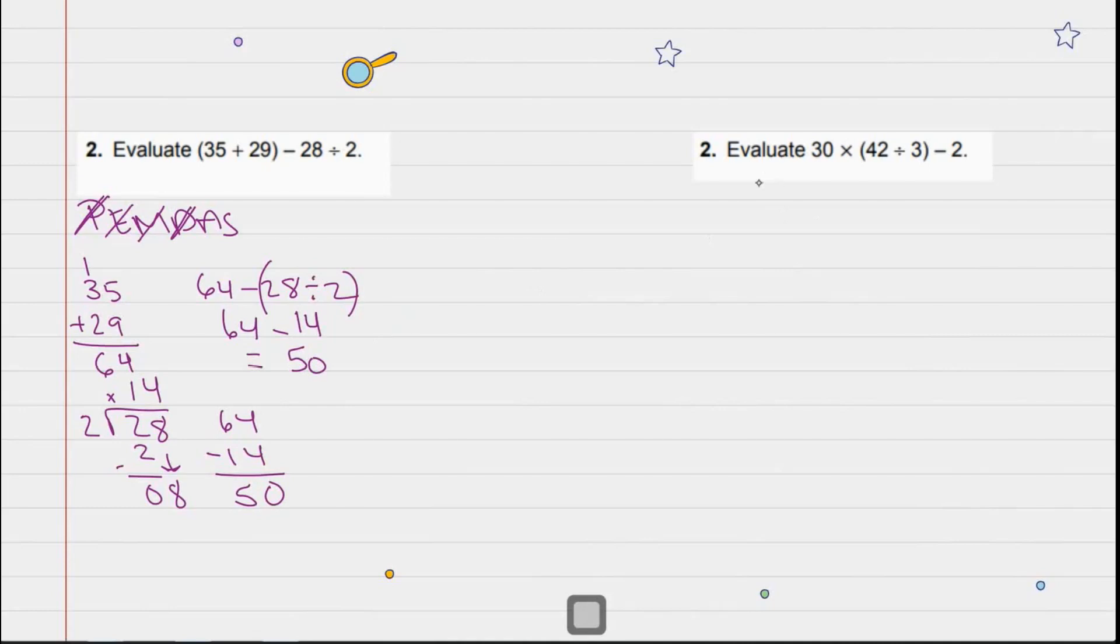Let's move over to this problem. So we have 30 × (42 ÷ 3) - 2. Let's write PEMDAS. Do we have parentheses? Yes, we do. So we're going to start there. 3 goes into 42 how many times? 3 goes into 4 once. 3 × 1 is 3. 4 - 3 is 1. I'm going to bring down the 2. 3 goes into 12 four times. And I'm left with no remainder. So this would be 14. So let's rewrite our expression: 30 × 14 - 2.